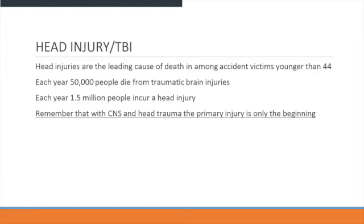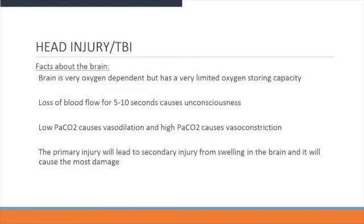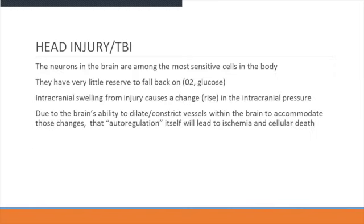Remember that central nervous system and head trauma — the primary injury is only the beginning. The brain is very oxygen-dependent and has very limited oxygen-storing capacities. Loss of blood flow for 5 to 10 seconds can cause unconsciousness. Low PaCO2 causes vasodilation and high PaCO2 causes vasoconstriction. The neurons in the brain are among the most sensitive cells of the body, and the only things they use are O2 and glucose.